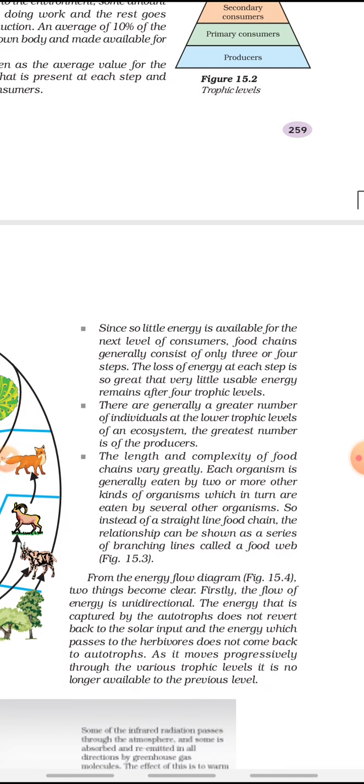Since so little energy is available for the next level of consumer, very little is transferred. For example, if we receive 10,000 joules from the sun, 1% is fixed, which is 10,000 joules in plants. When deer eats the plant, 10% of 10,000 goes, which is 1,000 joules. When tiger eats the deer, again 10% of 1,000 goes. So tiger receives 100 joules. This is how energy flows from one trophic level to another. A little amount of energy is available to the next level of consumer.